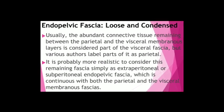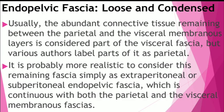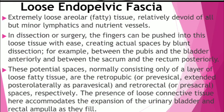This fascia forms a connective tissue matrix — like a packing material — for the pelvic viscera. It varies in density and contents. Some of it is loose, called the loose endopelvic fascia, because it contains loose areolar fatty tissue, and it is devoid of many structures — only minor lymphatics and nutrient vessels. During dissection or surgery, fingers can be pushed into this loose tissue with ease, creating actual spaces by blunt dissection.